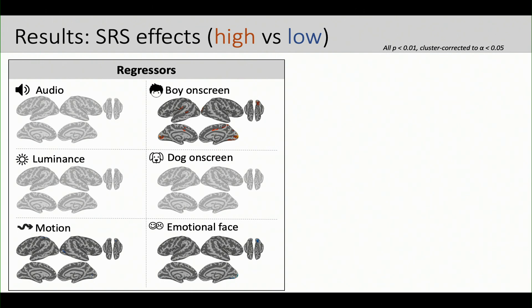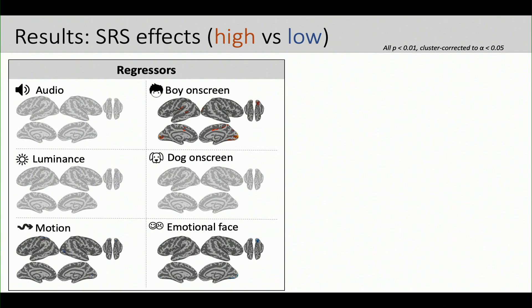So the first thing we tried were these regressors where we're actually explicitly modeling something about the stimulus. We modeled things from low-level audiovisual features like audio RMS and luminance up to things like times when the boy was on screen or the dog was on the screen, all the way up to the presence of an emotional face on the screen. And this is a contrast between high SRS children who are poorer in their social function and low scores or children who are better in their social function. The grayed-out contrast didn't show any significance, which may be not a terrible thing. So this is a high-level measure of social function, and so maybe it makes sense that these children don't necessarily differ in the low-level audiovisual processing. There are a few regions that pop out for some of the other regressors, but overall this was not overwhelming, I would say, in its sensitivity to this SRS measure.